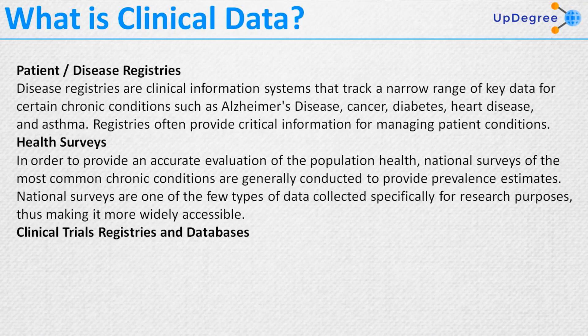Patient or disease registries are clinical information systems that track a narrow range of key data for certain chronic conditions such as Alzheimer's disease, cancer, diabetes, heart disease, and asthma, and often provide critical information for managing patient conditions. Health surveys are conducted nationally to provide prevalence estimates of the most common chronic conditions and are one of the few types of data collected specifically for research purposes, making them more widely accessible.